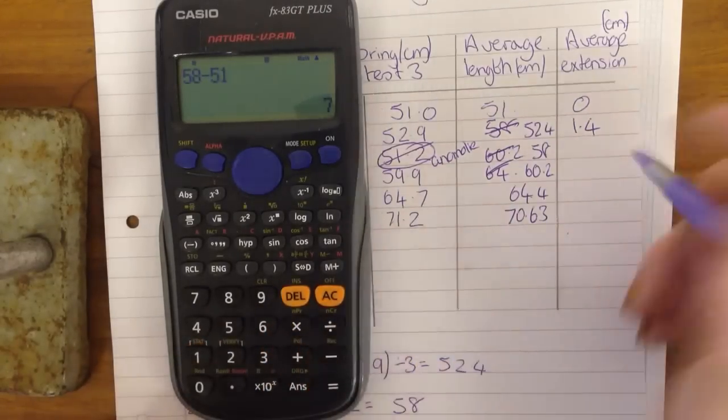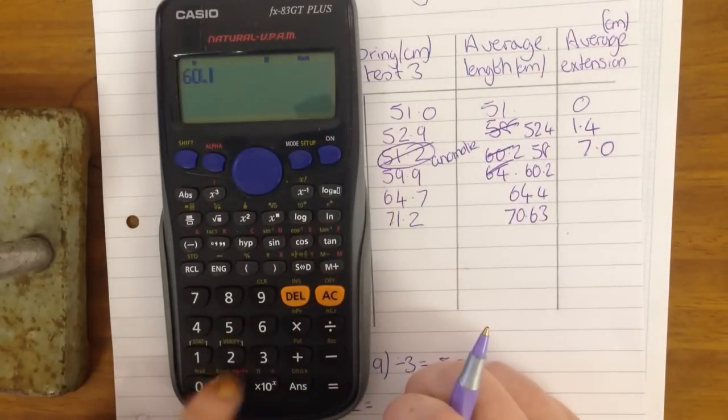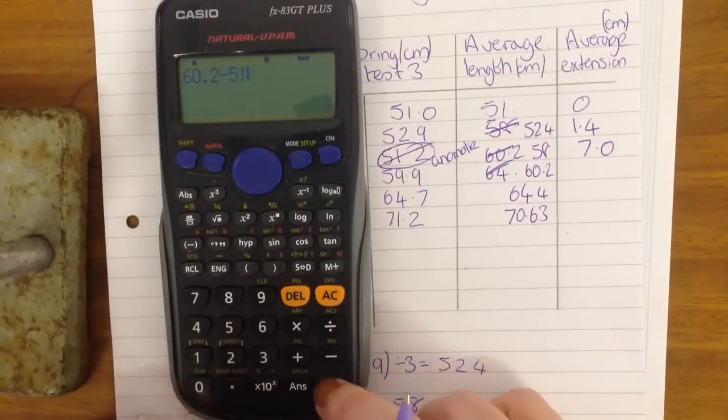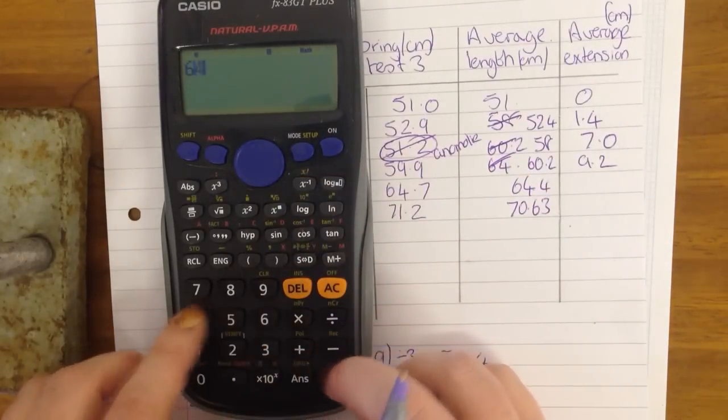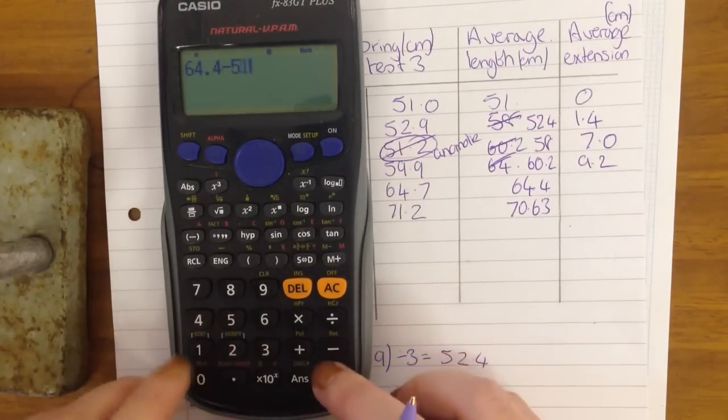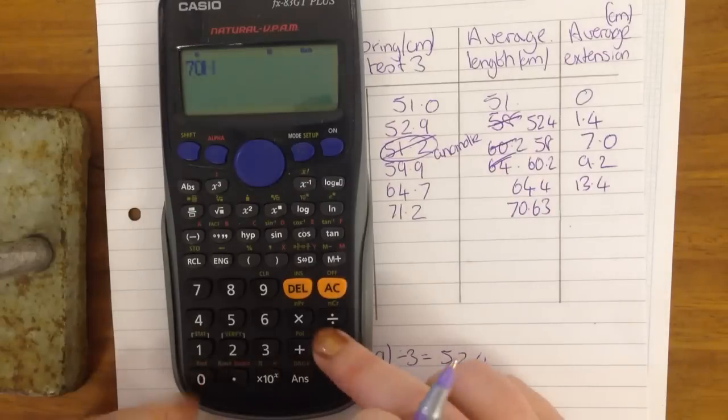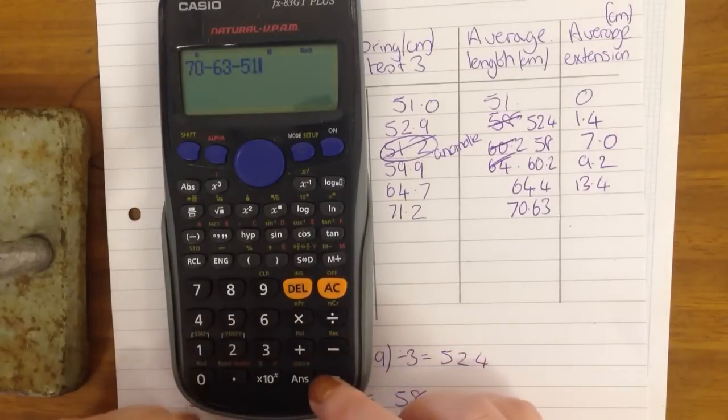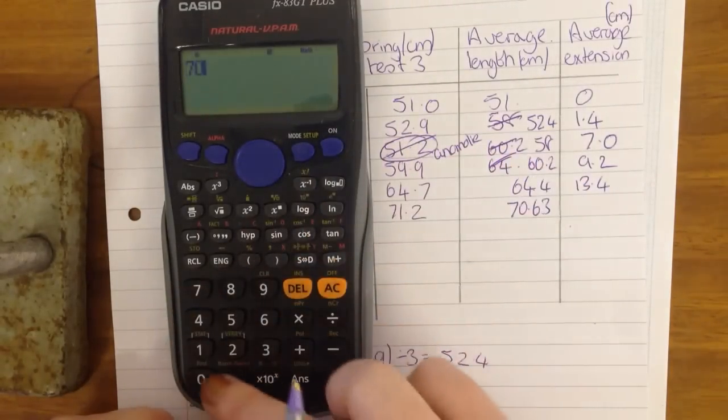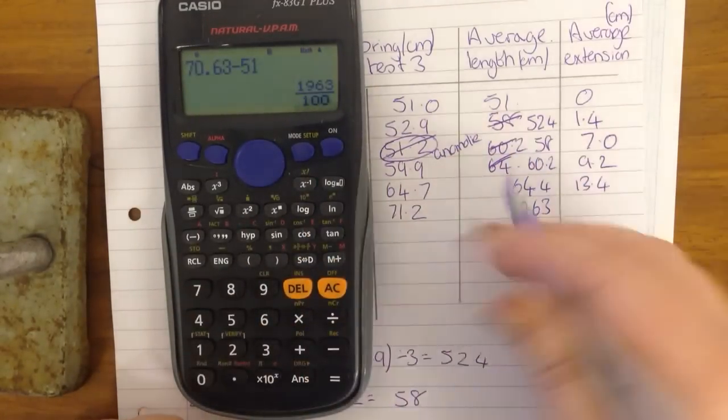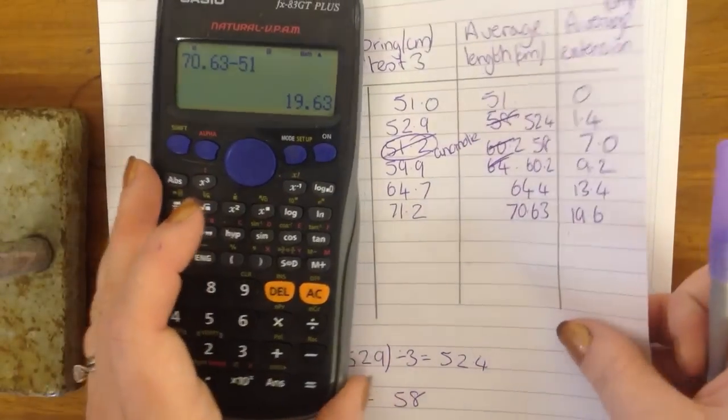58 minus 51 equals 7. And I'm going to keep my resolution, so it's going to be 7.0. And 60.2 minus 51 equals 9.2. 64.4 minus 51 equals 13.4. And 72.6 minus 51 equals 19.6. Again, I'm keeping the same resolution all the way down.